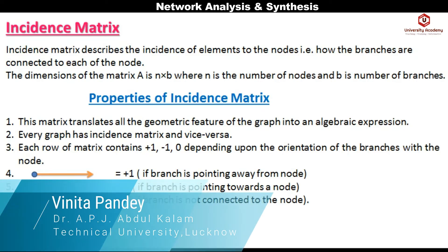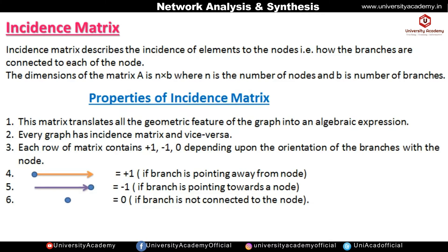The incidence matrix tells us how the branches are connected to each node of the graph. It is represented by matrix A. The dimension of matrix A is n cross b, which is also known as the order of the matrix, where n is the number of nodes and b is the number of branches. So when we draw the incidence matrix, we consider the number of nodes and number of branches.